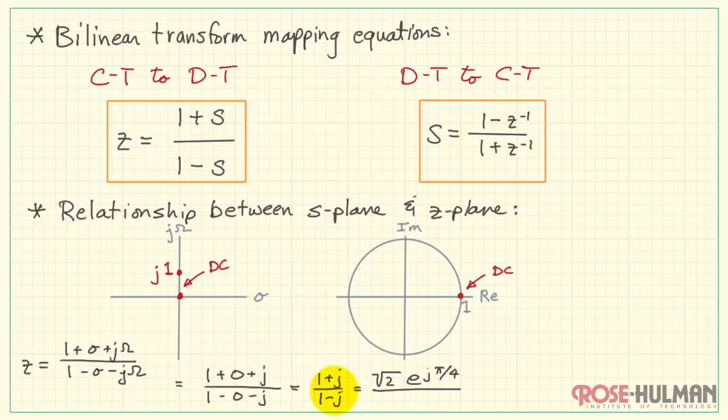Subtracting the denominator phase, we have e to the j pi over 2, with a radius of 1, and that brings us along right here. This frequency omega, and this would be little omega, as it's called in the discrete time or z-plane, says that little omega is pi over 2 for capital omega equals 1.